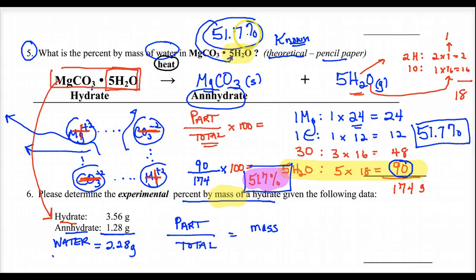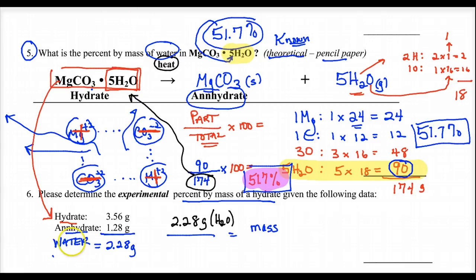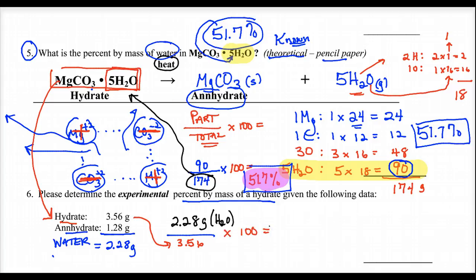The part we care about is the water: 2.28 grams. Divide by the total mass of the hydrate, which is 3.56, times 100. That gives 64%. So 64% of the entire mass of this compound is due to water.